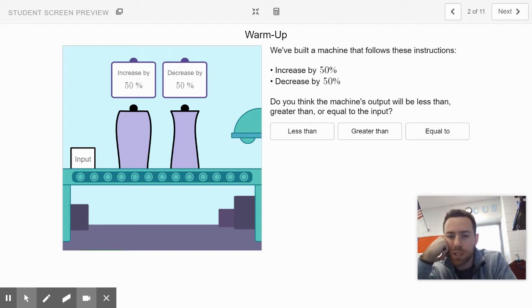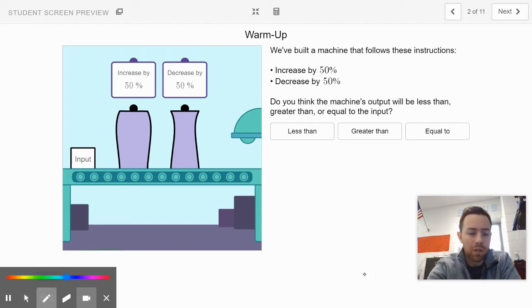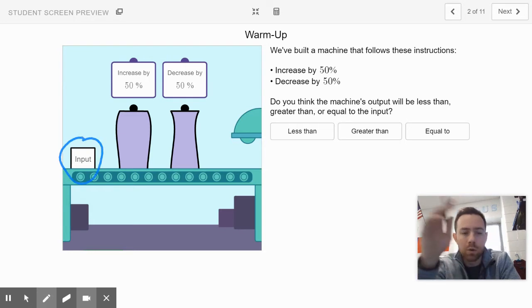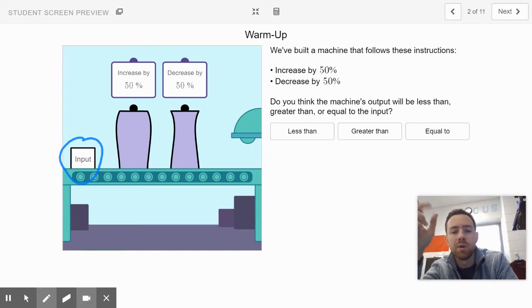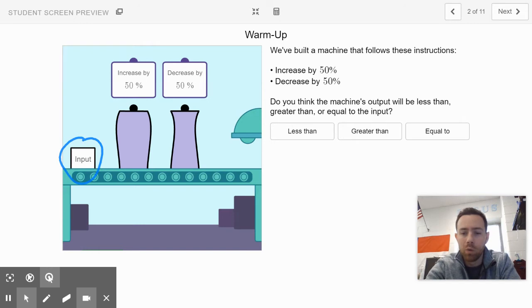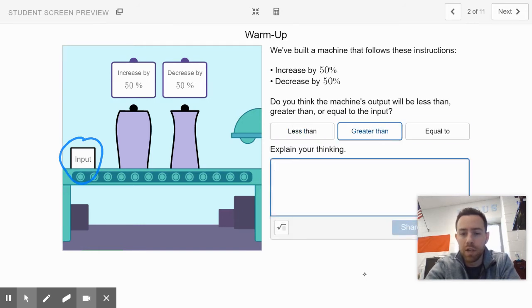It explains the fact that they built this machine that follows these instructions. It takes an original number, the input, whatever it is—10, 20, 30—it increases it by 50 percent and then decreases what the new number is by 50 percent. So it takes the new number, increases it by 50 percent, takes the outcome and then decreases that by 50 percent. I want you to tell me if you think the final output will be less than, greater than, or equal to the original input.